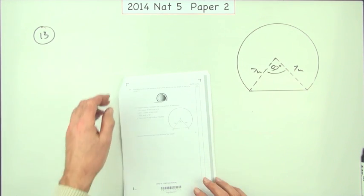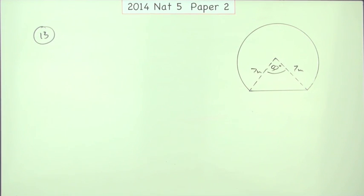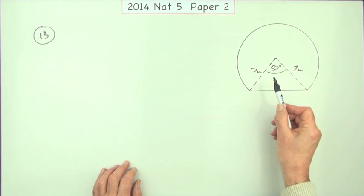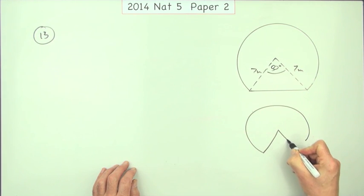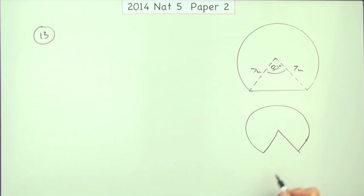Well, there's two ways you could do that. You could either consider it as the sum of two parts, which is the big pacman shaped part, which is a major sector, with the addition of a triangle, which would be the simpler way of doing it because there's only two parts.